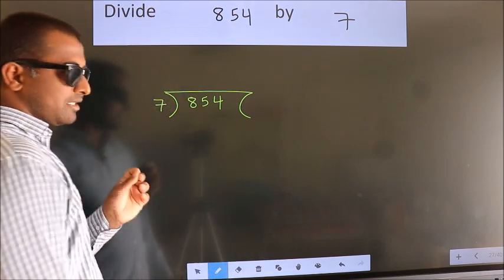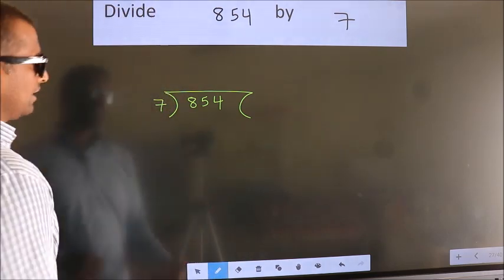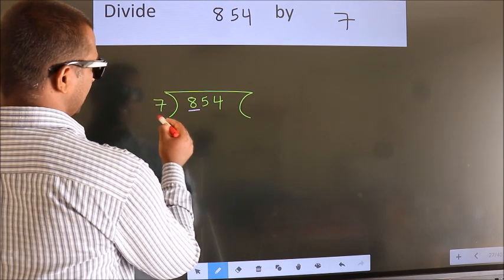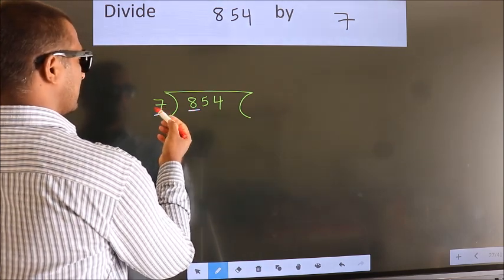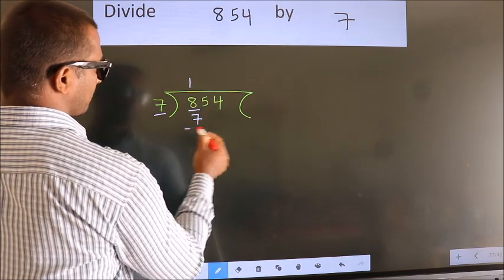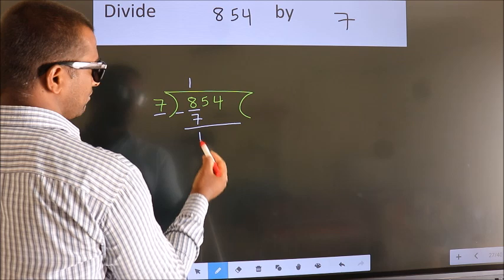This is your step 1. Next, here we have 8, here 7. A number close to 8 in 7 table is 7 once 7. Now we should subtract. We get 1.